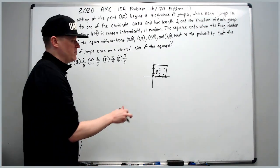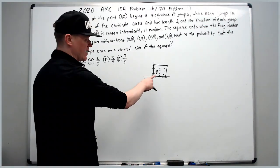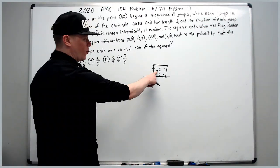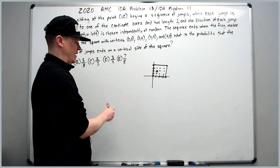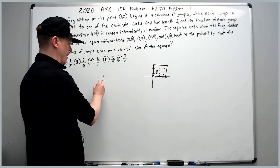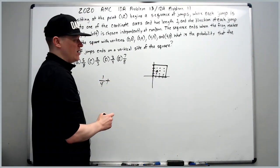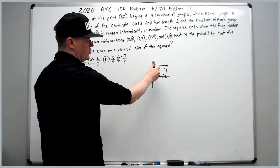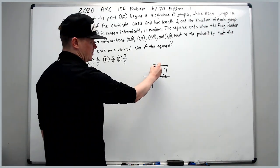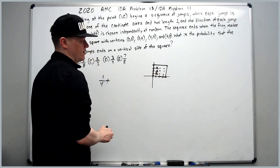From the first jump, the frog has a 1 in 4 chance of getting directly to a vertical side, so start with 1/4. The frog could also jump to the top or the bottom — positions above or below the starting point — and these two positions actually have an equal chance of reaching the top or the side.